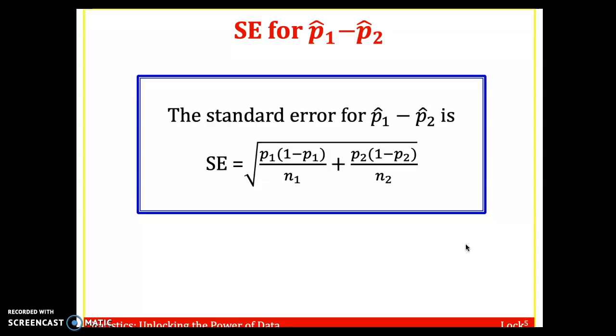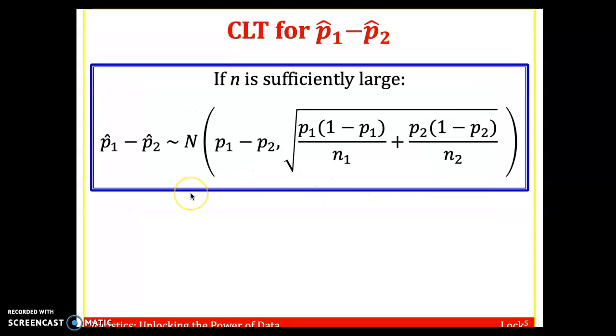Here's the standard error formula for the difference of two proportions. Standard error is the square root: P1 times 1 minus P1 over N1 plus P2 times 1 minus P2 over N2. The sample sizes do not have to be the same. We could use a normal distribution to approximate the difference of two sample proportions by making the center the difference of the two population proportions. It's a messy standard error formula.